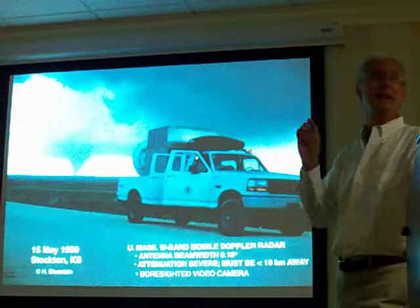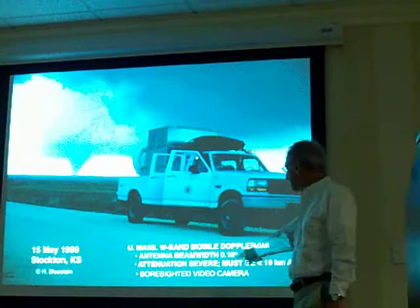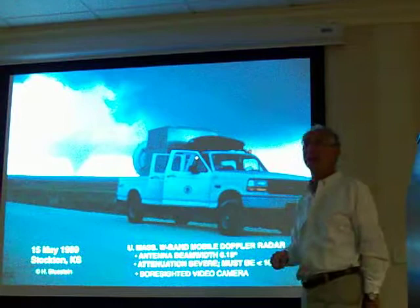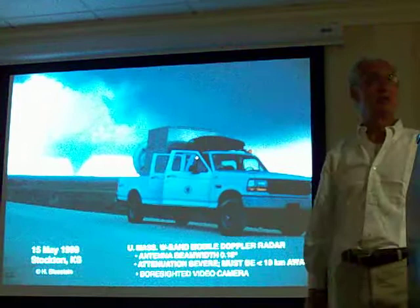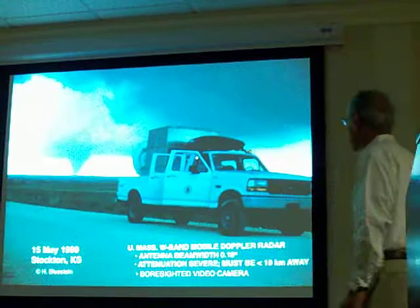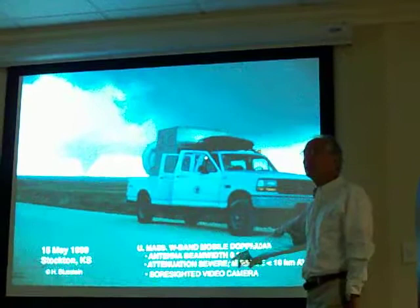With this antenna, the beam width is 0.18 degrees, so if the tornado is a couple of miles away our footprint is only about 10 meters across. We can literally map the winds inside someone's house — the living room, the bathroom, the dining room. This is a tornado we were probing in 1999. The problem with the W-band radar is that attenuation is severe and you have to be within 10 kilometers to get any data. There's also a co-sited video camera mounted with it.